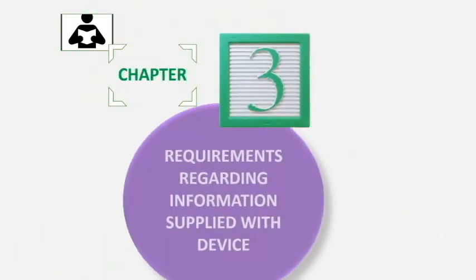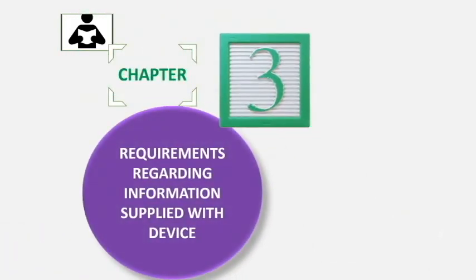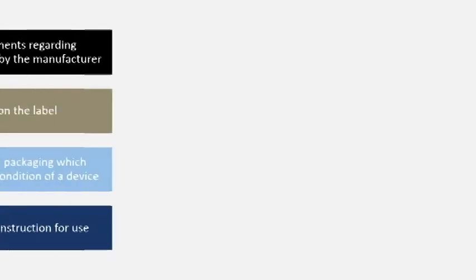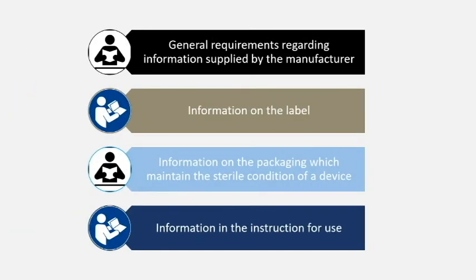Chapter 3 deals with requirements regarding the information supplied with the device, which covers labeling. In general, labeling consists of both the label and instructions for use, including operator's guide, manual, or service manual. It has four subclasses: the first covers labeling of the device, the second covers information specifically given on labels, the third covers information given on sterile packaging, and the fourth covers information in the instructions for use.